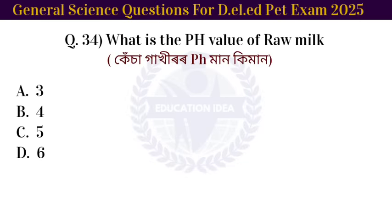Next question: what is the pH of milk? The pH of milk is 6.